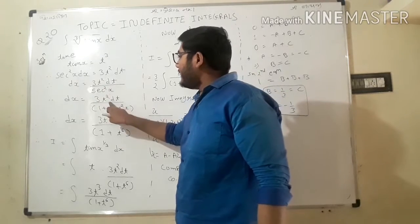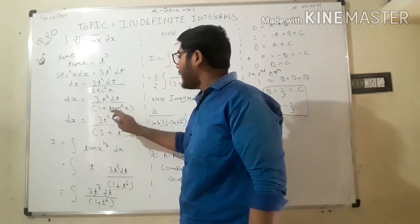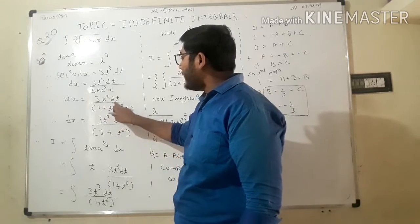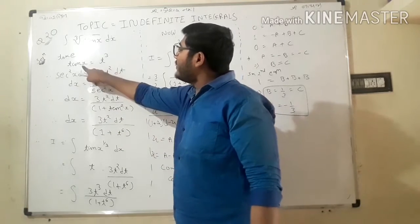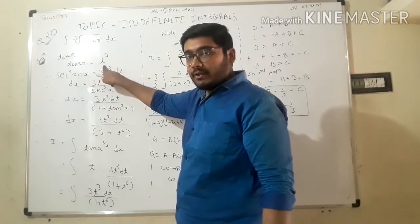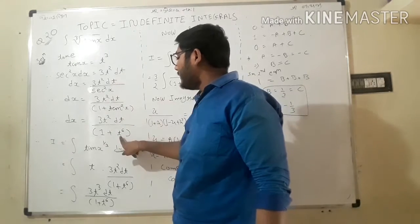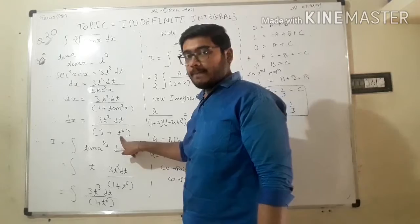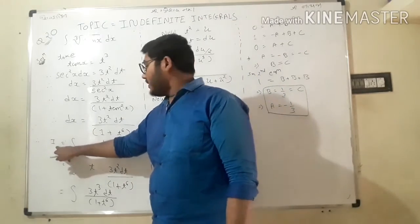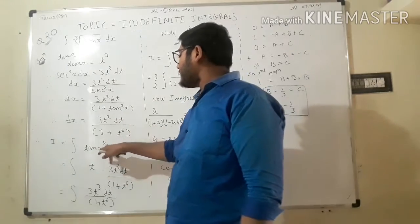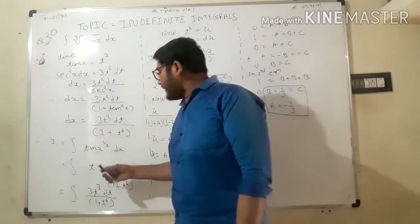So dx equals 3t² dt divided by sec²(x), which equals 1 plus tan²(x). Since tan(x) = t³, we have tan²(x) equal to t⁶. Now we set up the integration of tan(x)^(1/3) dx.